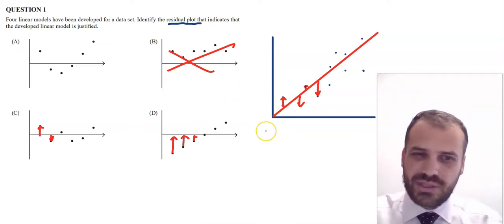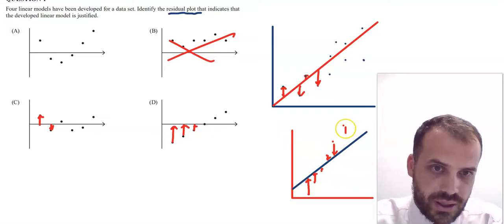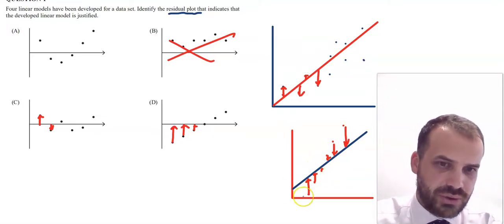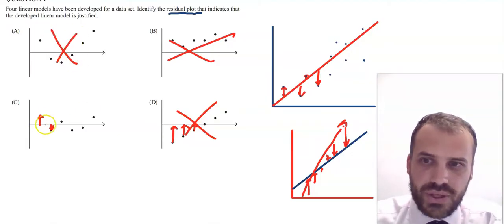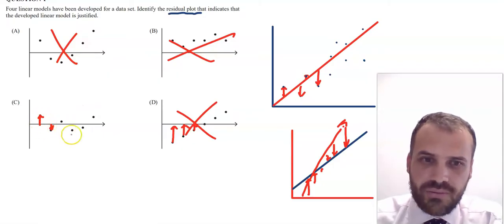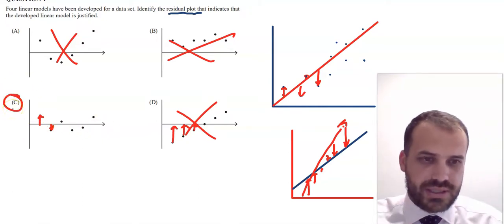That pattern would indicate the line is not a good fit — it should have looked different. So that option is gone too. For similar reasons the third option is no good either. This one is our answer: an even number of things above and below the line, scattered randomly — not the first half below and the second half above. The answer is C.